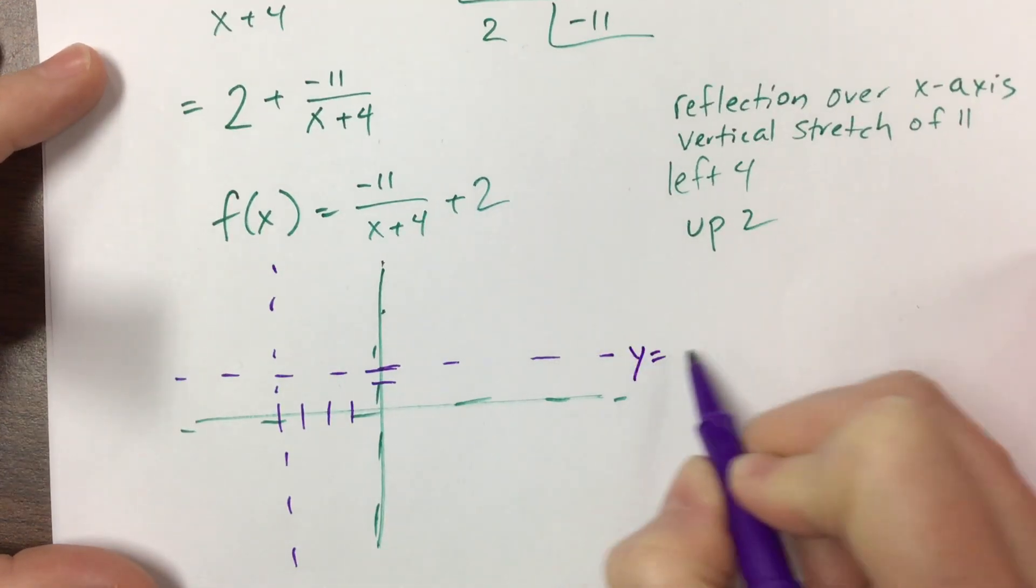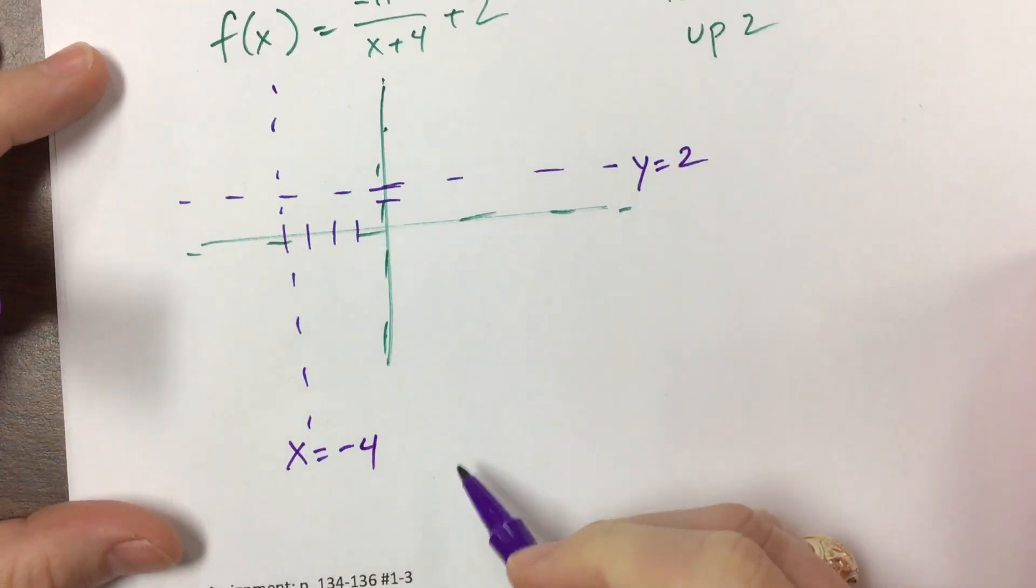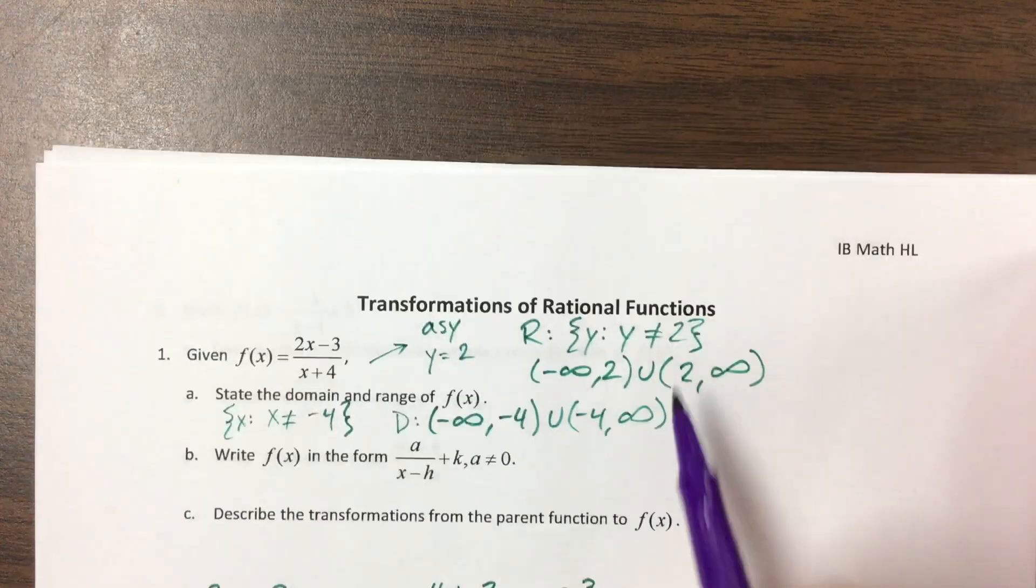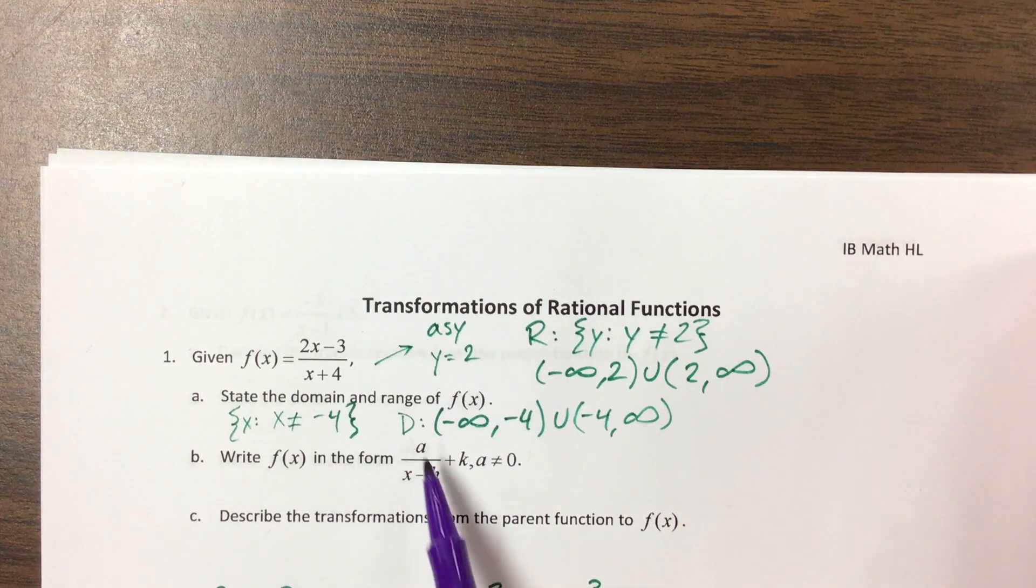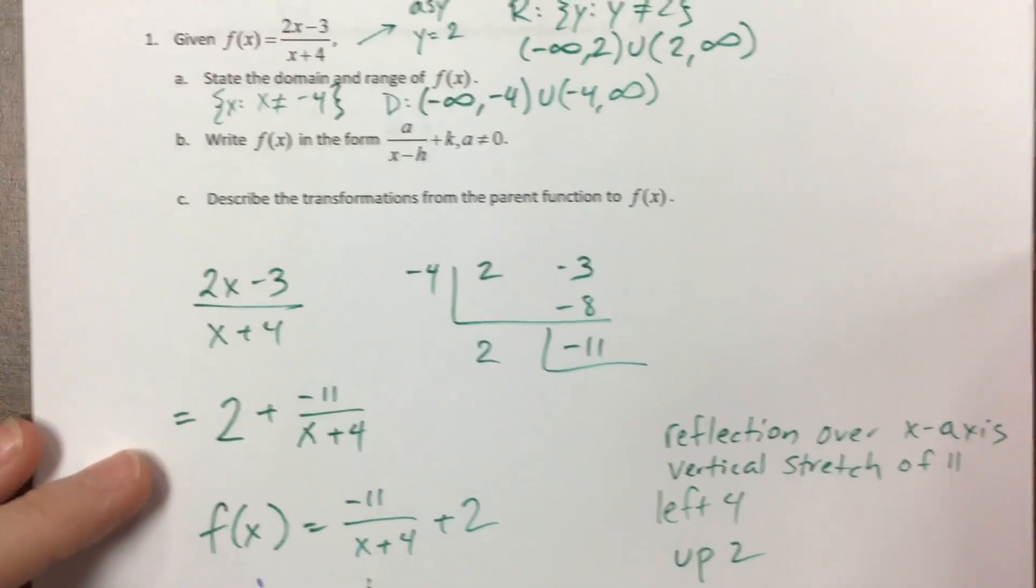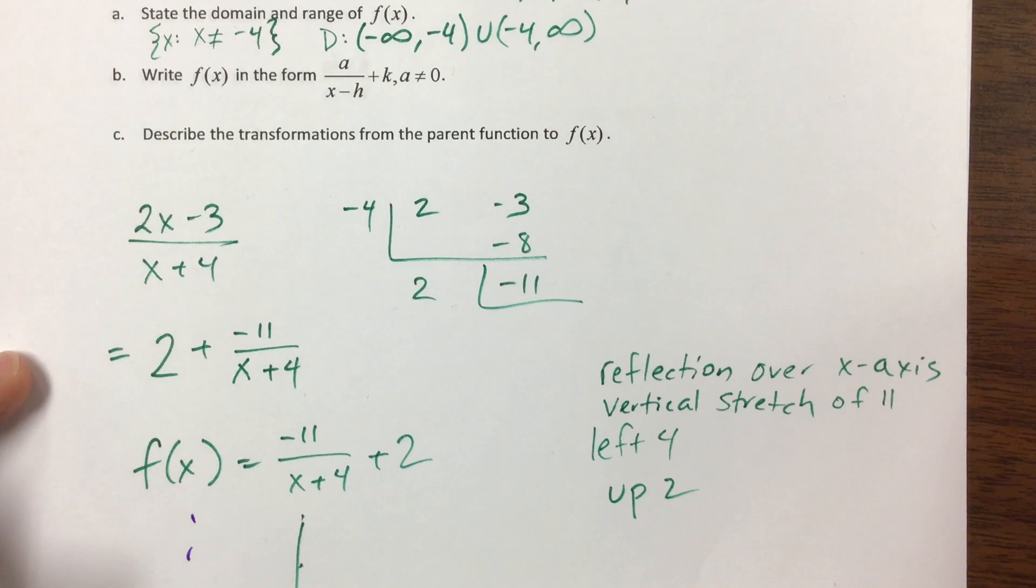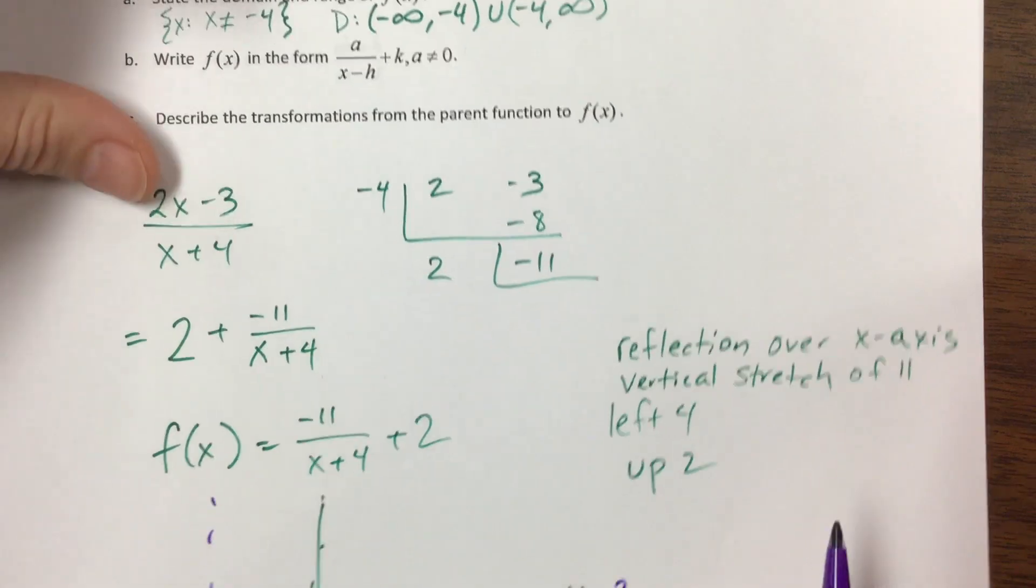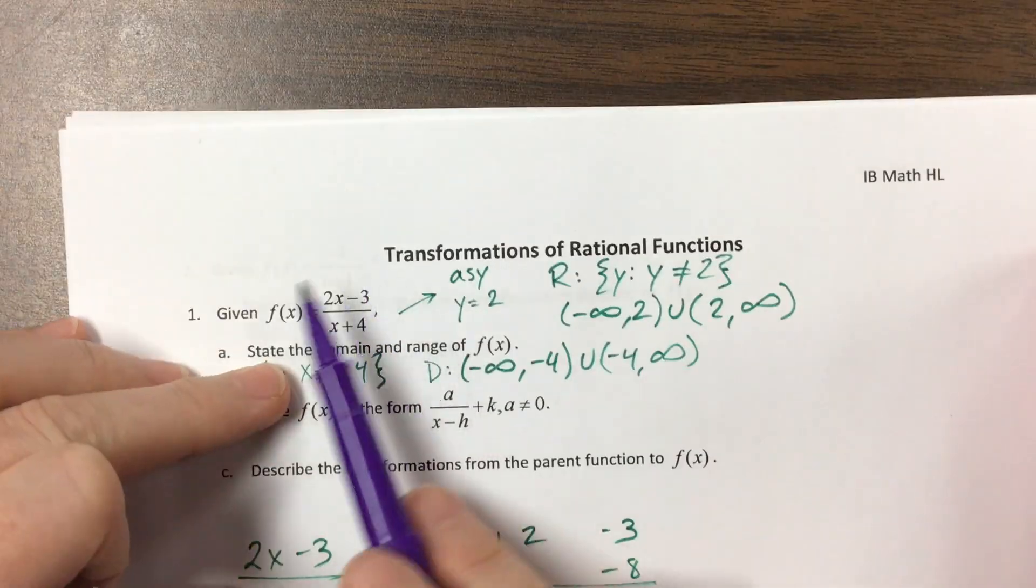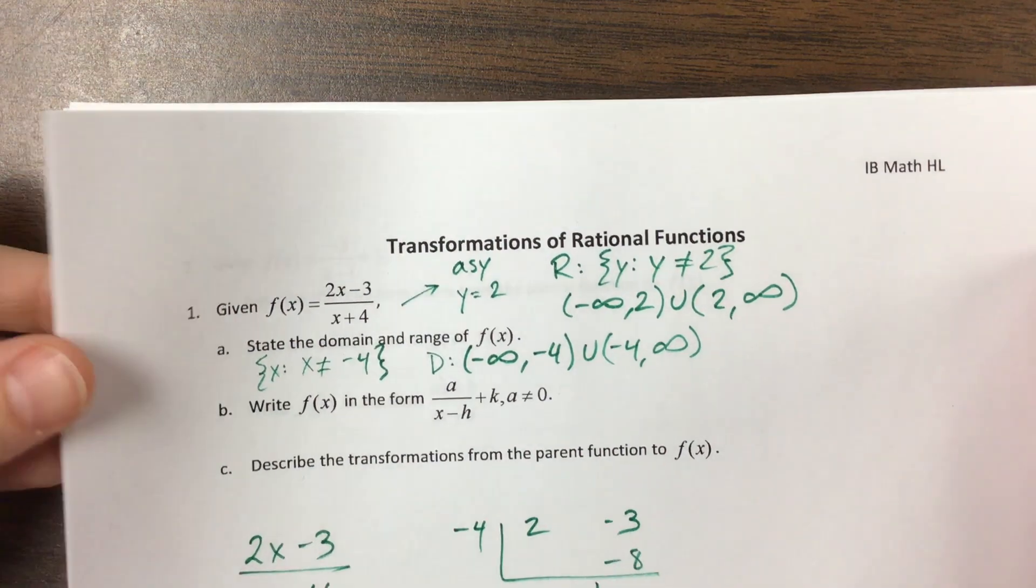And so we had an asymptote of y equals 2 and x equals negative 4, which we knew from up here when we talked about our range and our domain. So dividing this out and rewriting it, it's a lot easier to see that we took this parent function, y equals 1 over x, and we did those transformations. So hopefully you can see the connection between the equation written this way and how that was transformed.